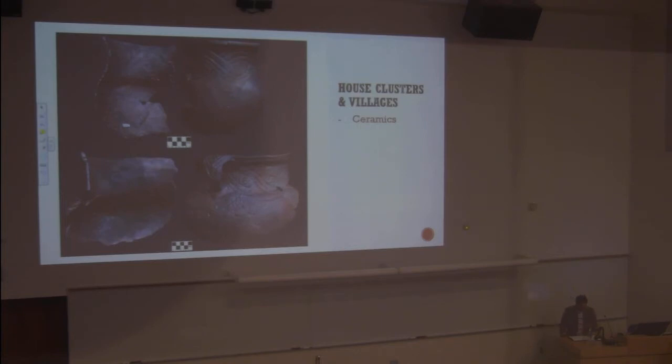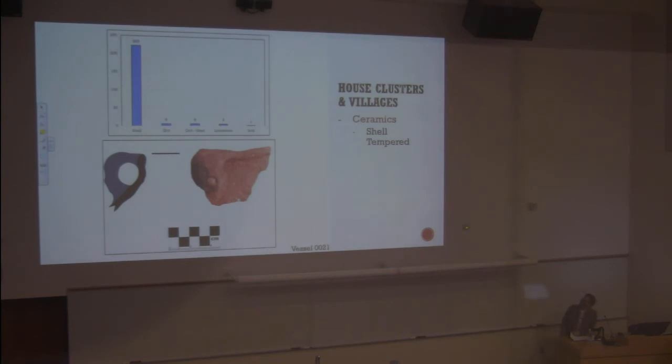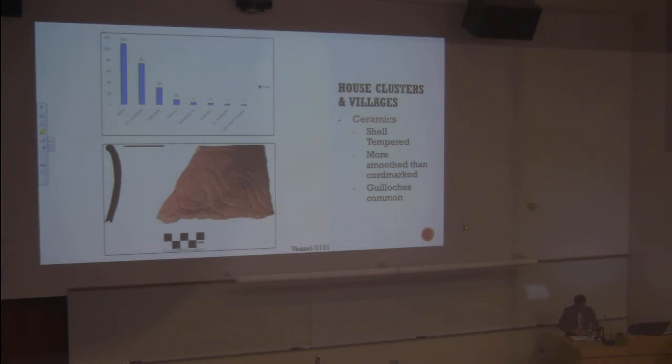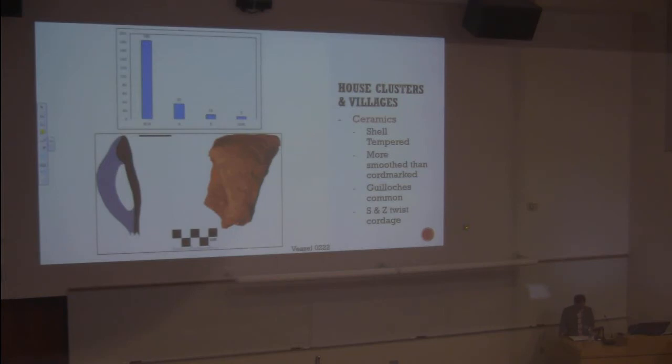This is a sample of 241 vessels. The full Guard and Turpin assemblage will be a lifetime of analysis. But here are some samples. Keep in mind these are non-random. But visually, these appear in line with the overall assemblage. They're all shell-tempered. They tend to be smooth rather than cord-marked, though both can be found. Decoration is very common. 131 vessels were decorated. These decorations were mostly curvilinear guilloche, these interlocking scrolls. 75 were such. There were three rectilinear guilloche, five Ramey scrolls. These Ramey scrolls are Mississippian-inspired styles. S and Z cordage was present. 37 S twists and 12 Z twists.